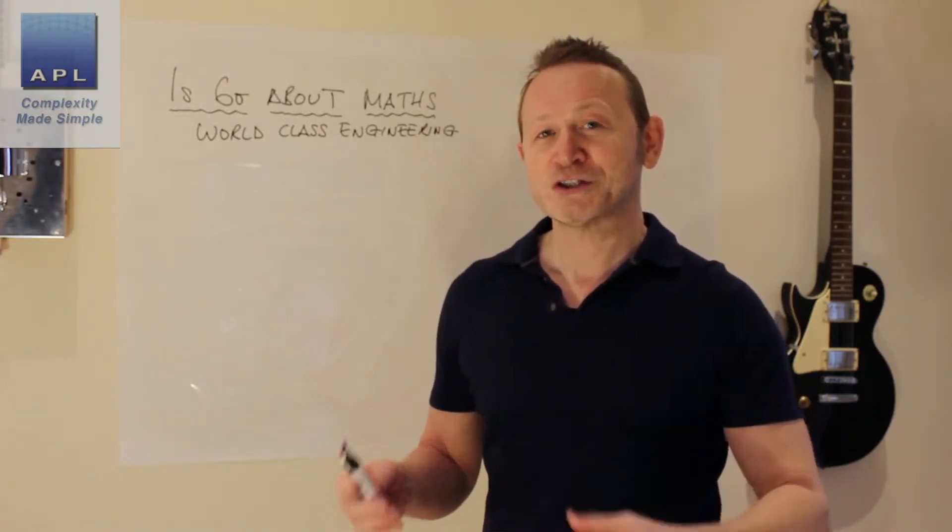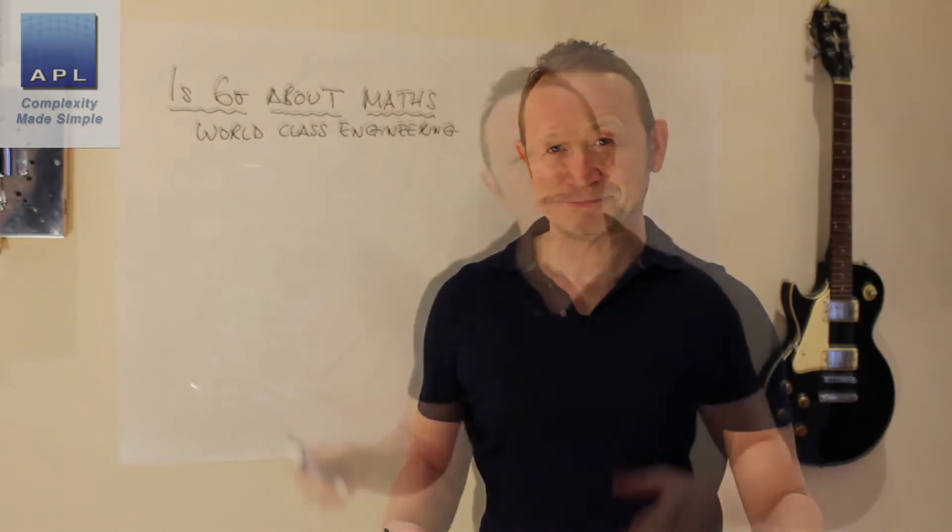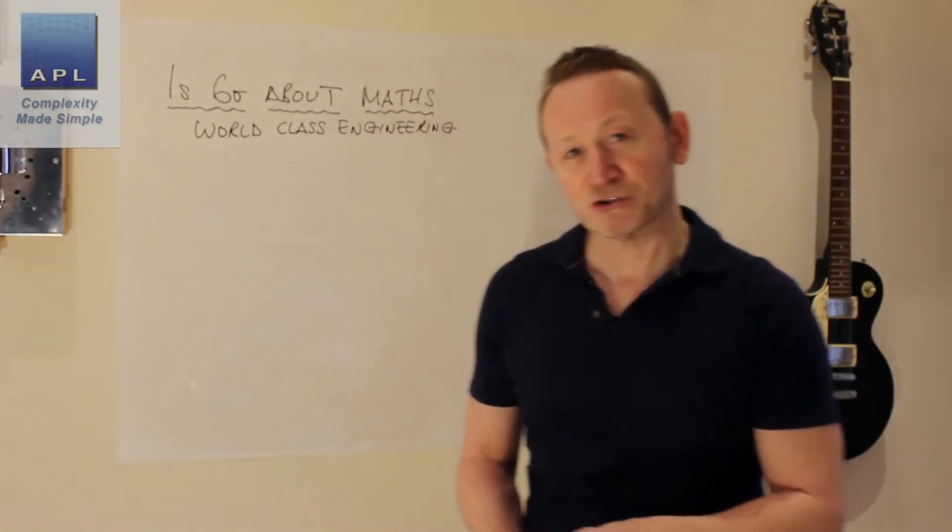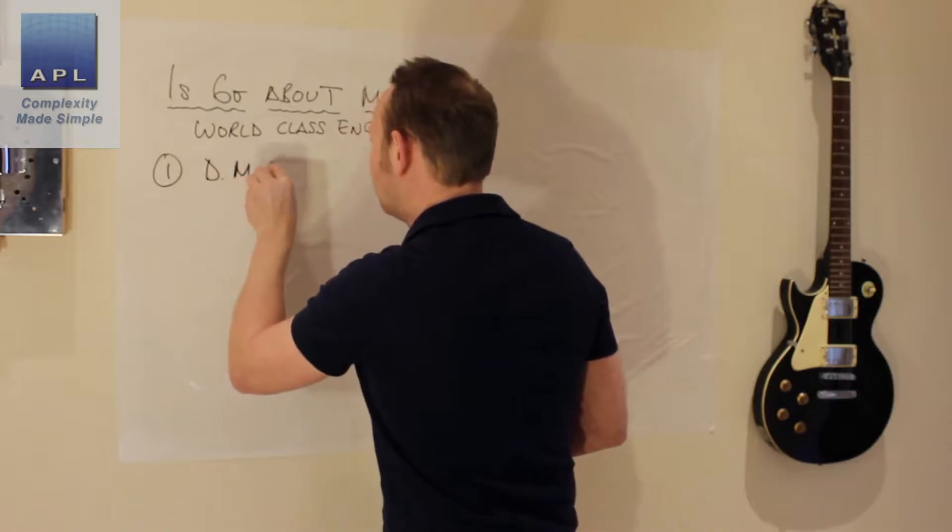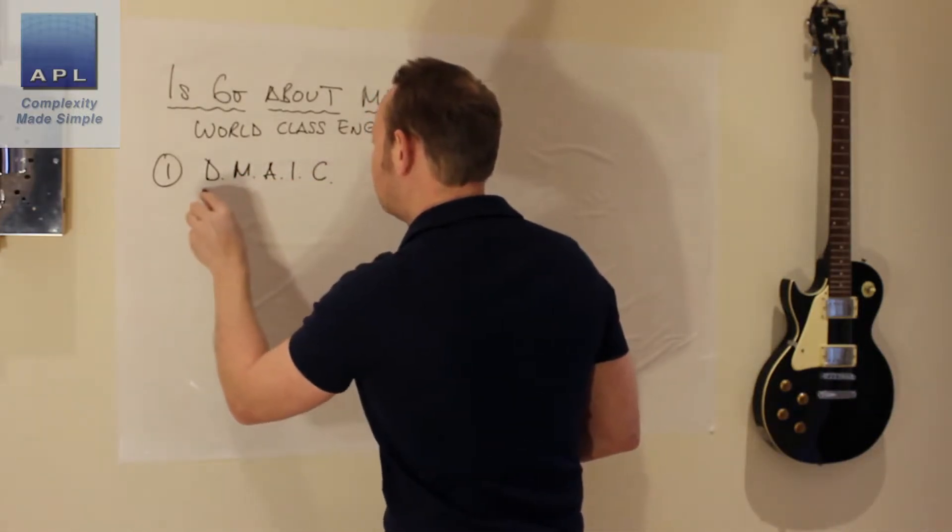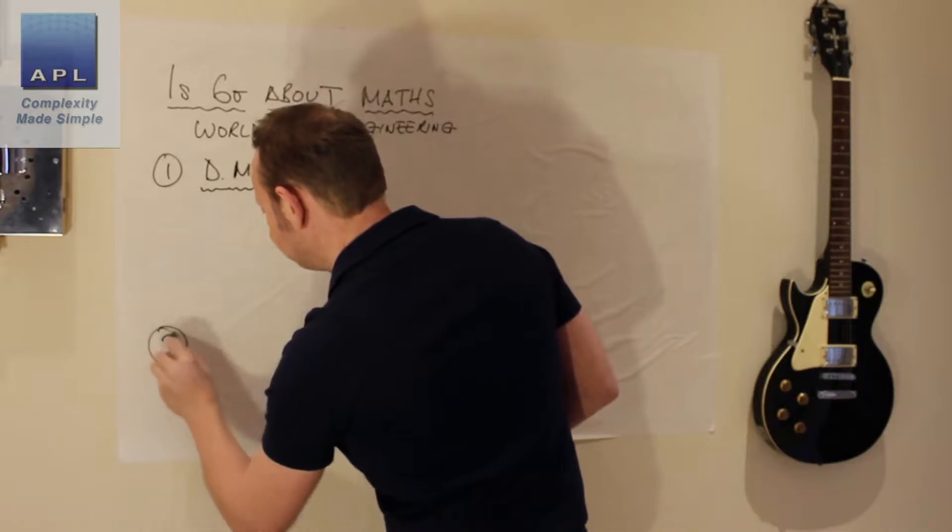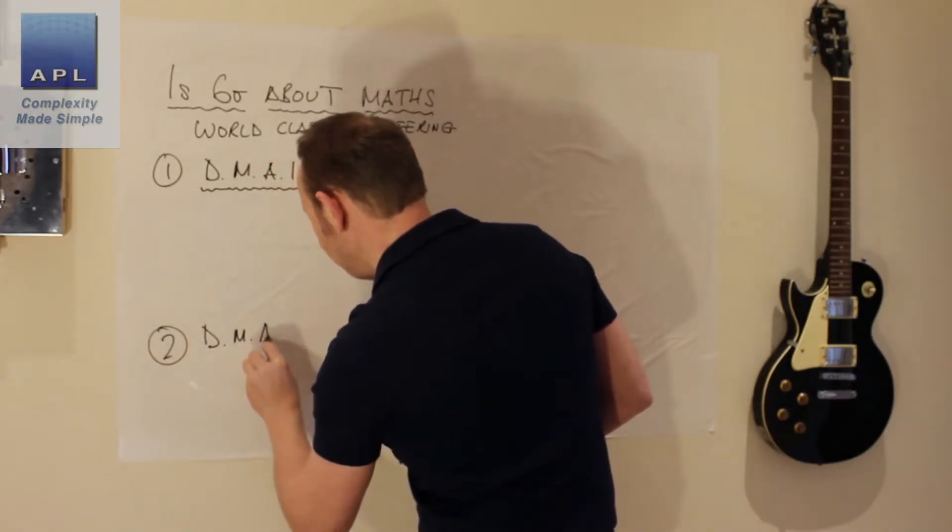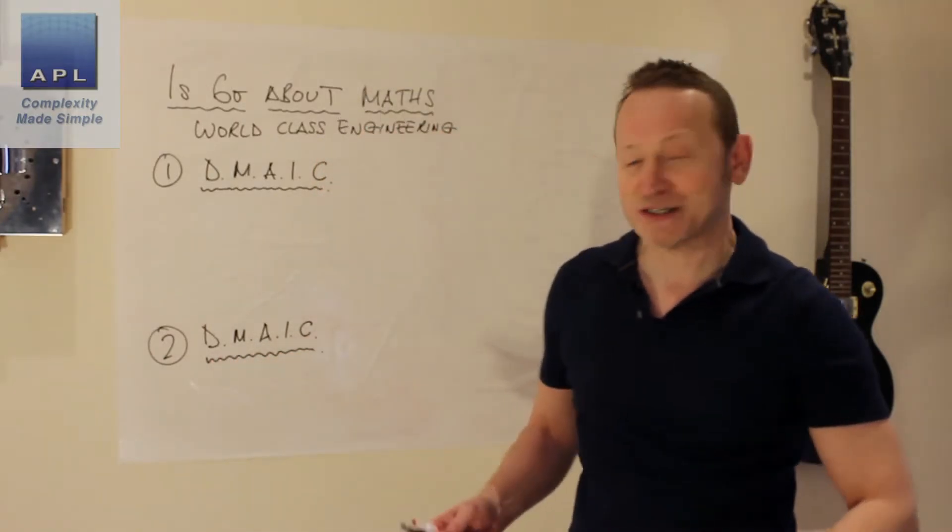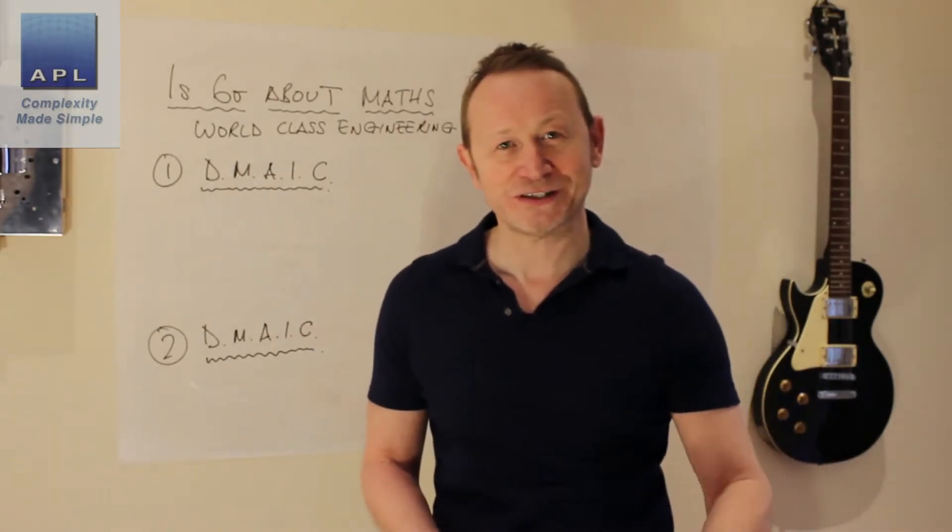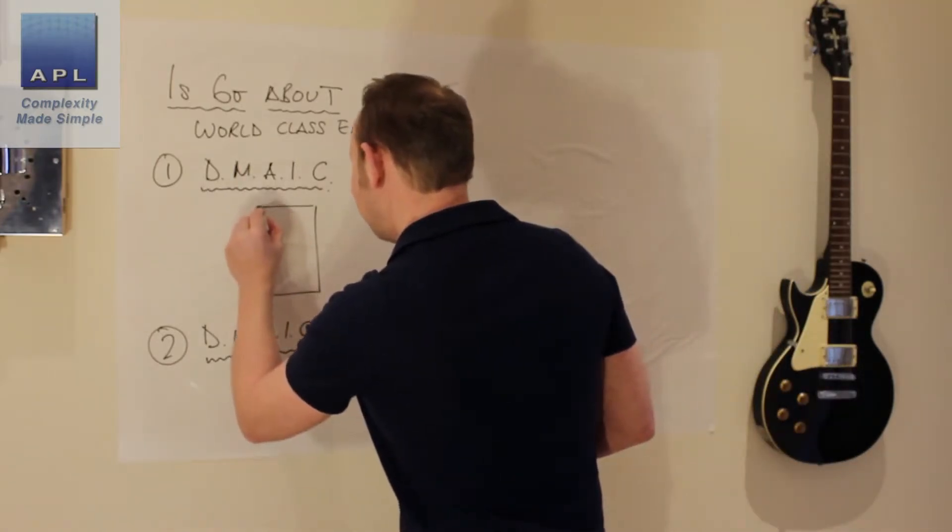So we're going to take a look at the two DMAIC cycles with maths and without maths. We're going to look at DMAIC cycle one, which is without the maths. And we're going to look at DMAIC cycle two, which is with the maths. Now, the centerpiece of both of these and the centerpiece of Six Sigma, it's not mathematics. The centerpiece of Six Sigma is this thing. It's physics.